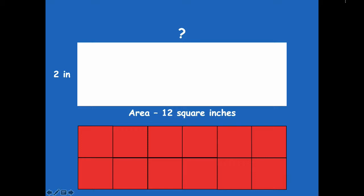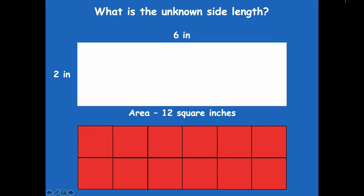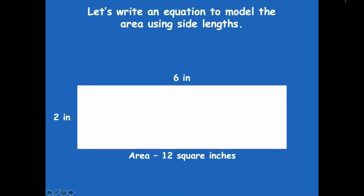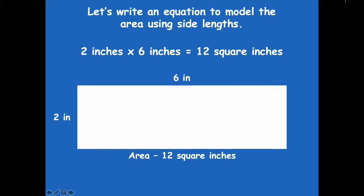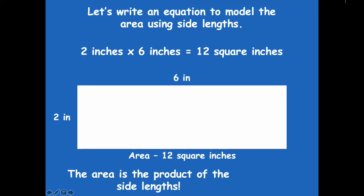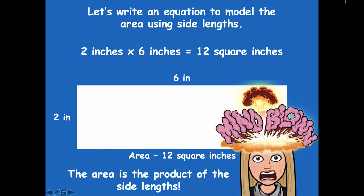I know one side length is two inches, but I'm trying to figure out the unknown side length. Can I use my tiles to help me? Yes! Since the side length was two inches I had two tiles on the side, and across the top I have six tiles — so I can replace the question mark with six inches. Let's write an equation: two inches times six inches equals 12 square inches, because the area is the product of the side lengths.